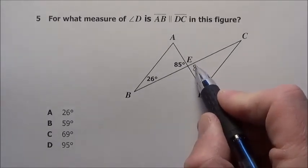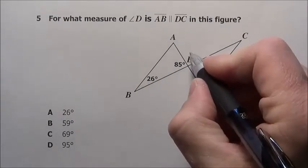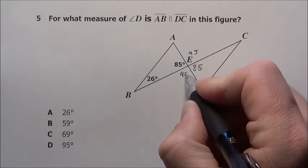If that's 85, its vertical angle right here is 85. That's 85 right in here, it's got to be 95 because that's a linear pair and that's 95.